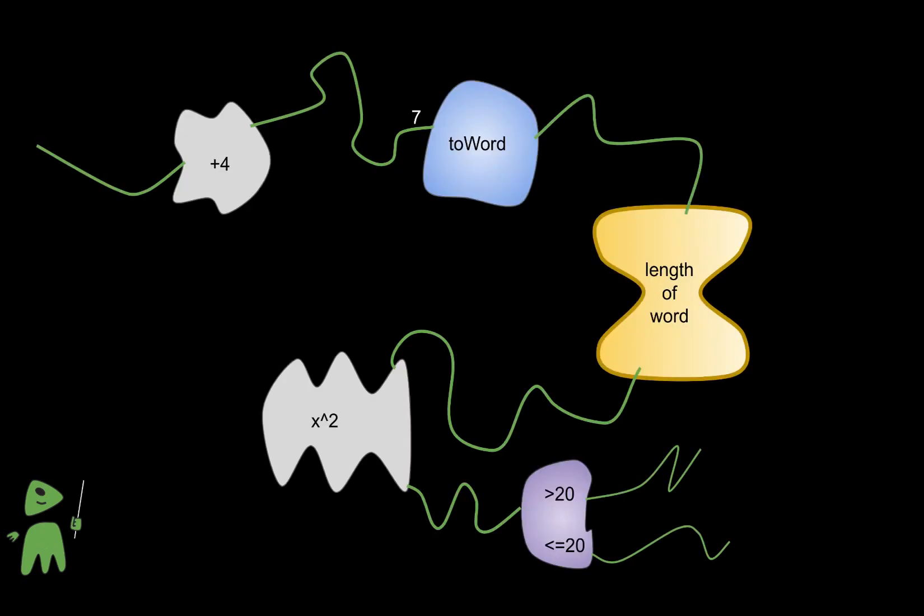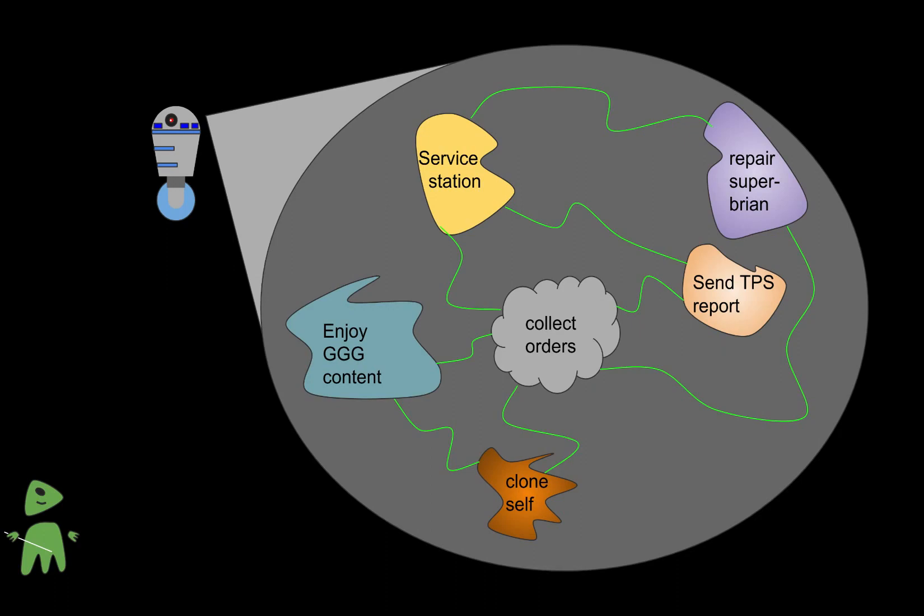Many cells can be linked together to make a sophisticated program. Notice how the last cell even branches. Now let's zoom out and look at a program that powers an entire robot.